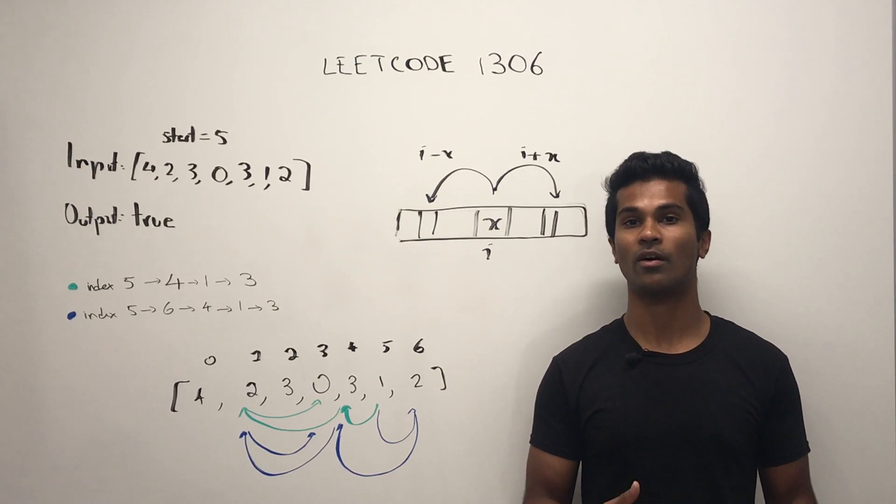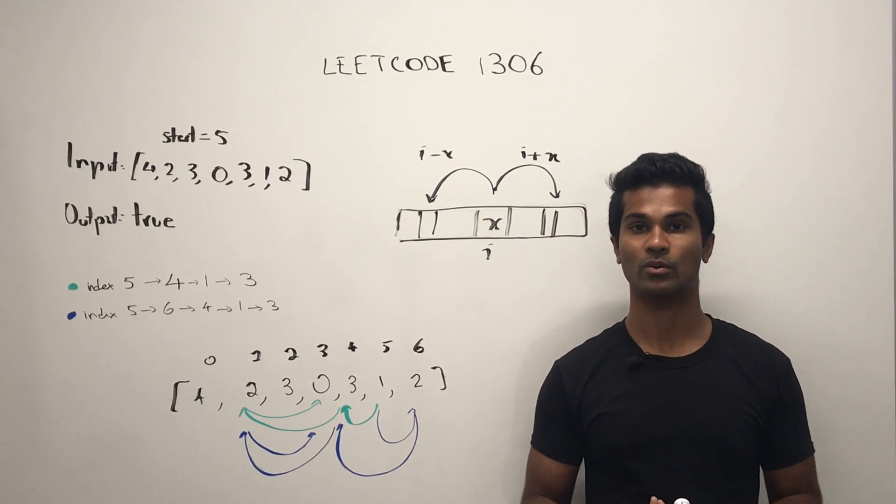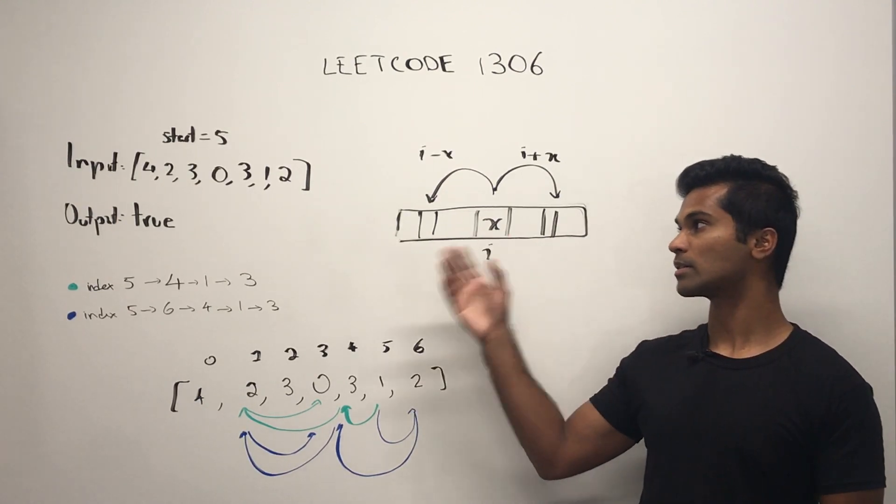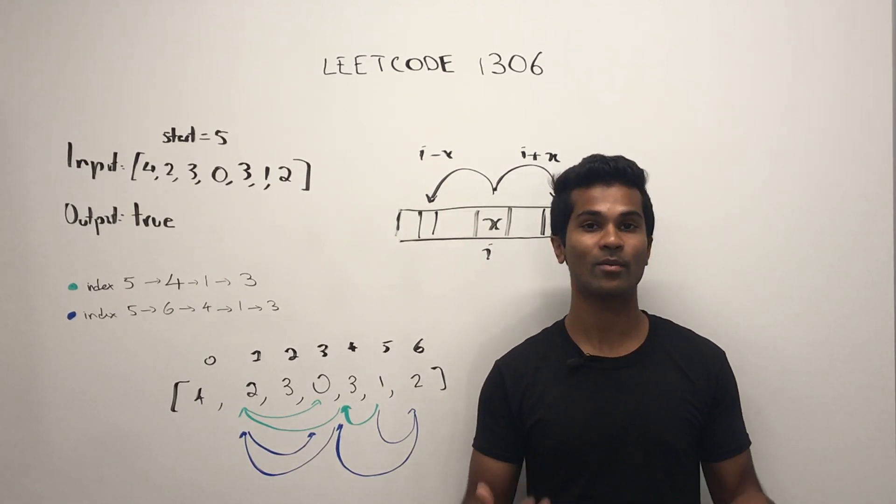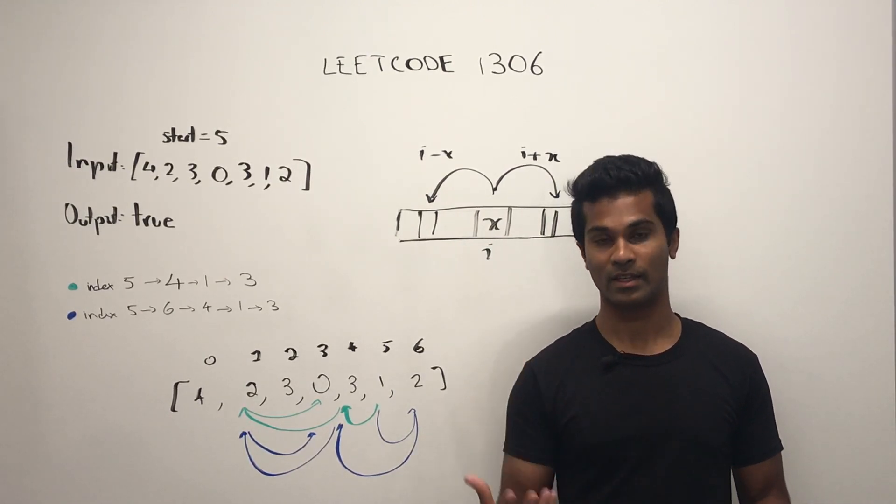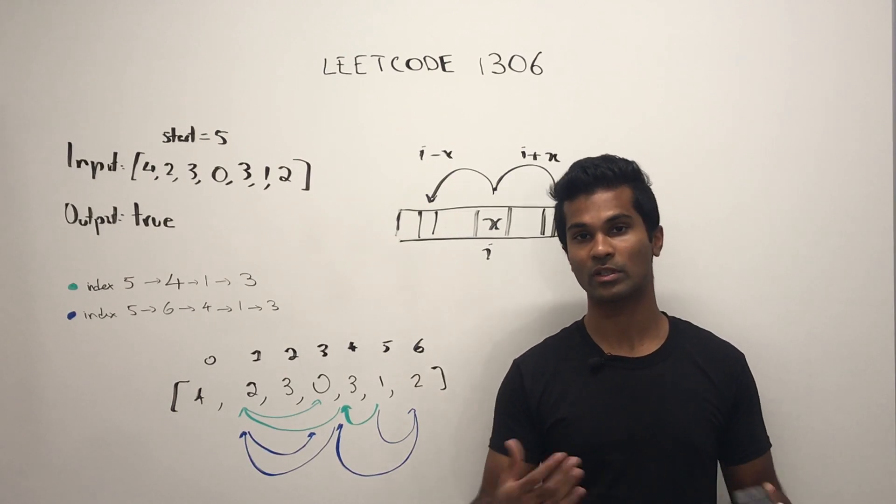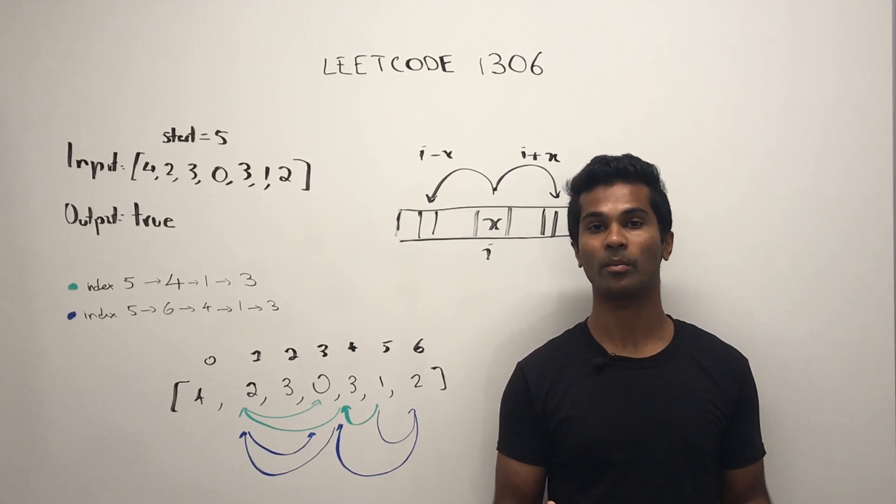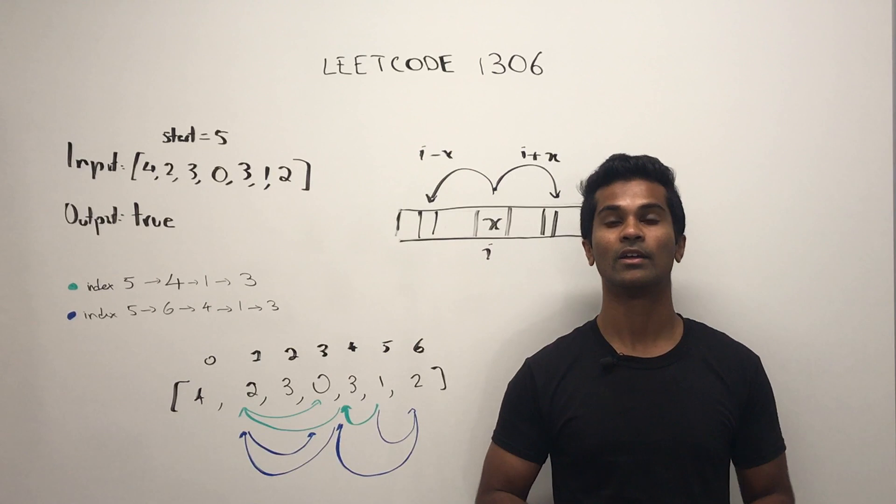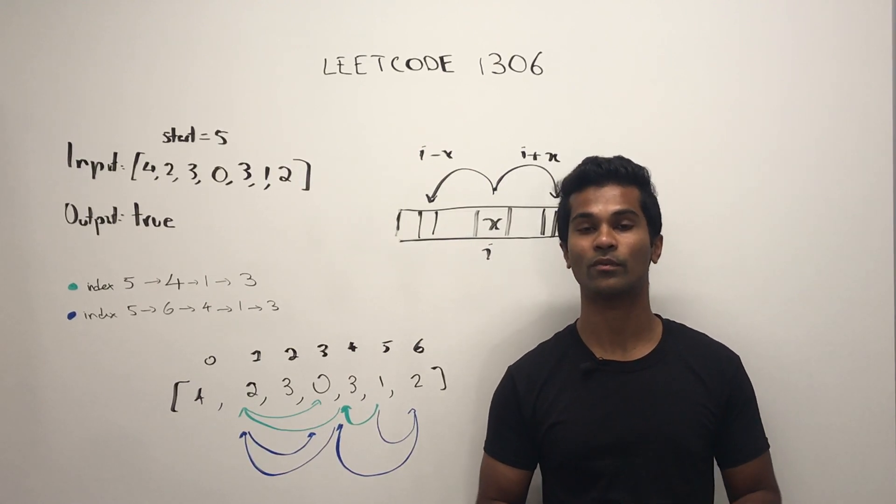This should remind us of a recursive approach where we do a DFS through this space of the array, and anytime we encounter a value in the array which is zero, we can just bubble true up to the top of the recursive stack. So let's see what a recursive tree for this would look like.